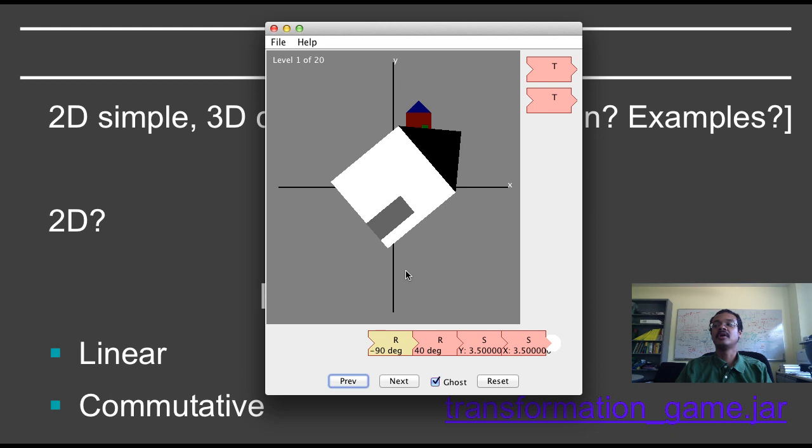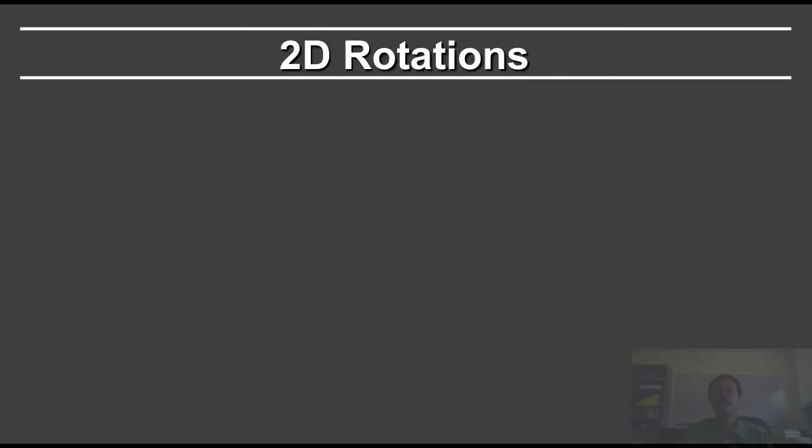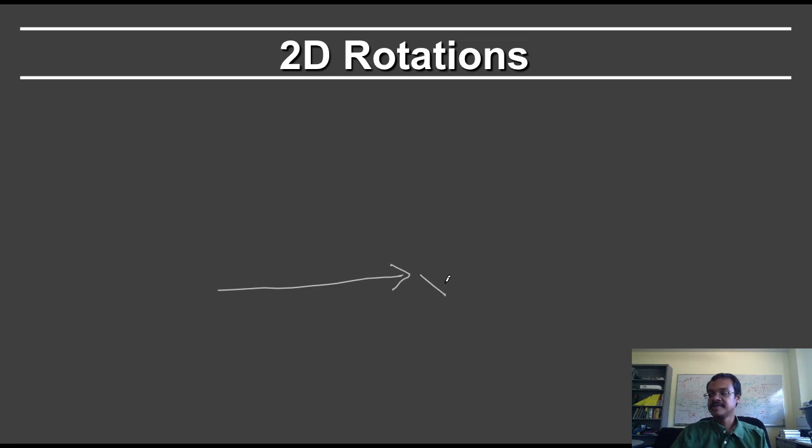The remaining question is what is the matrix for a rotation in 2D? And this is what we'll now proceed to derive. This is the x-axis. This is the y-axis. And we have a point P here that we want to rotate to some point P prime where the angle between these is some angle theta. So this will be an angle theta.